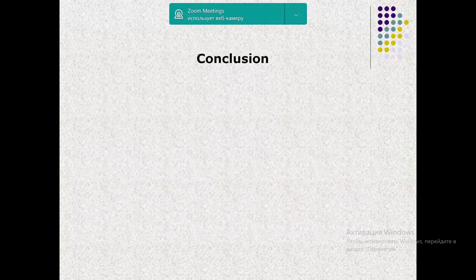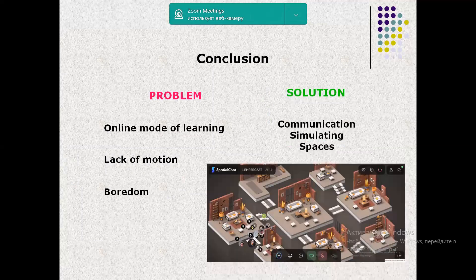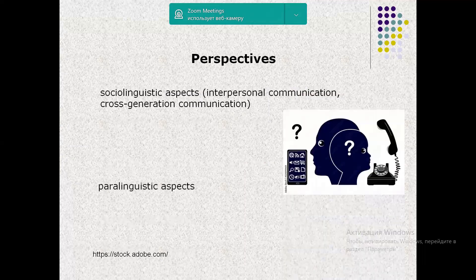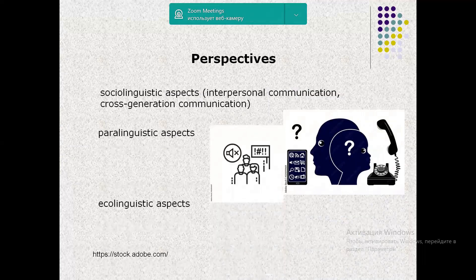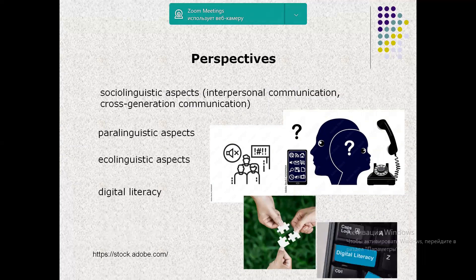To summarize the results of the survey and the research: the introduction of new digital products online is crucial for teaching effective communication, even though teachers emphasize their preference for blended learning. As for students' attitude, the majority admitted the problem of lack of motion, and some were bored of being static — which is easily solved by CSS. However, there are other challenges for teaching effective communication online, namely the relationship issue, the generation gap, paralinguistics, the ecology of communication, and digital literacy, which may be the subject of further investigation.